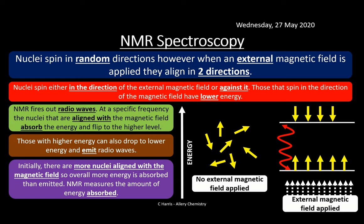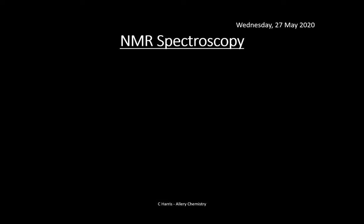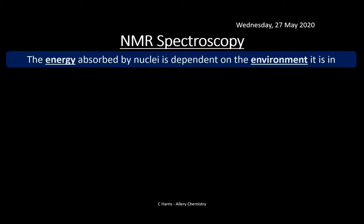The energy absorbed by a nucleus is dependent upon the environment it's in. This is really important — NMR is very much about what's neighbouring the carbon or hydrogen atom, rather than just the atom itself. That neighbouring environment has an influence on the nucleus.